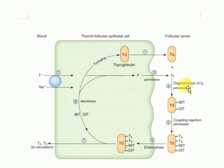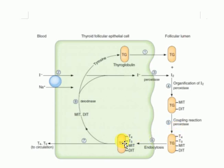These were the steps involved in synthesis. Now Step 6 is endocytosis. The iodinated thyroglobulin is stored in the follicular lumen until the thyroid gland is stimulated to secrete thyroid hormone. When stimulation comes and the thyroid cells are stimulated, the iodinated thyroglobulin is taken back into the follicular cells — that process is known as endocytosis.